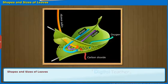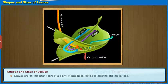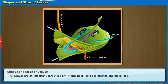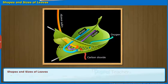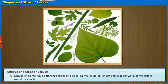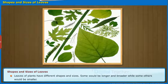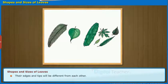First, let us study about the different types of leaves. Leaves are an important part of a plant. Plants need leaves to breathe and make food. Leaves of plants have different shapes and sizes — some would be longer and broader while some others would be smaller. Their edges and tips will be different from each other.